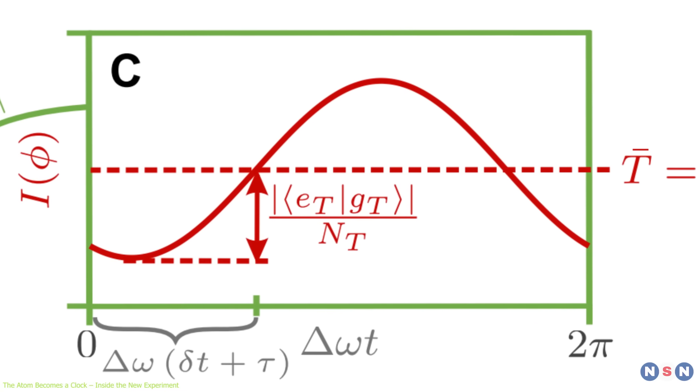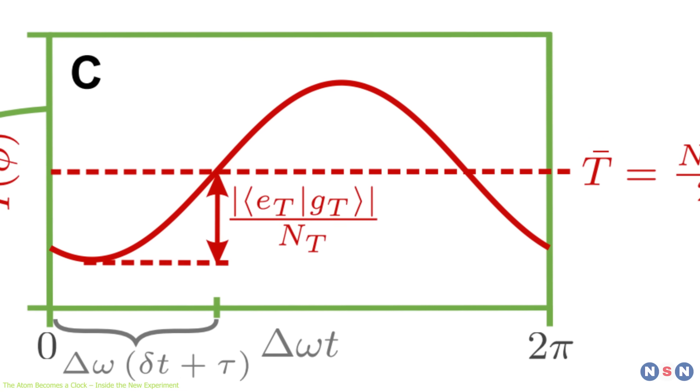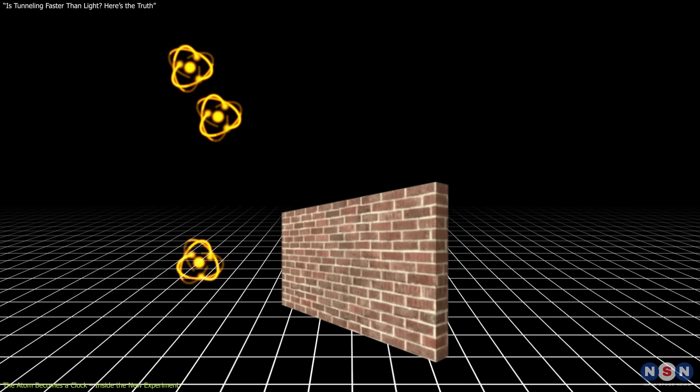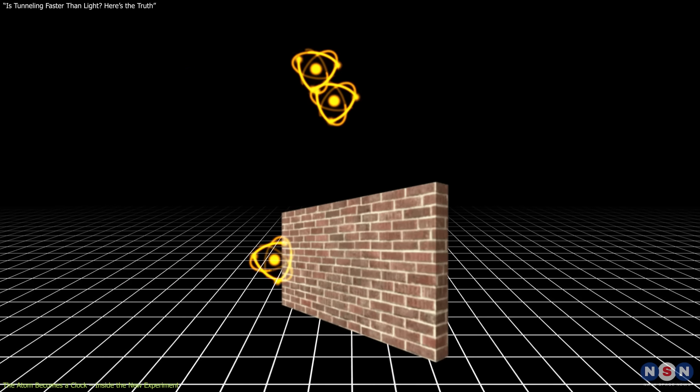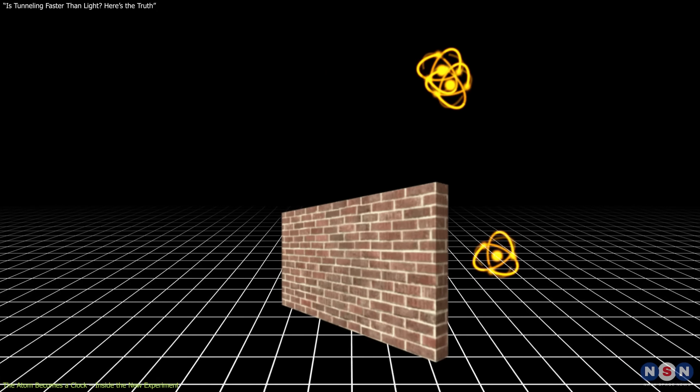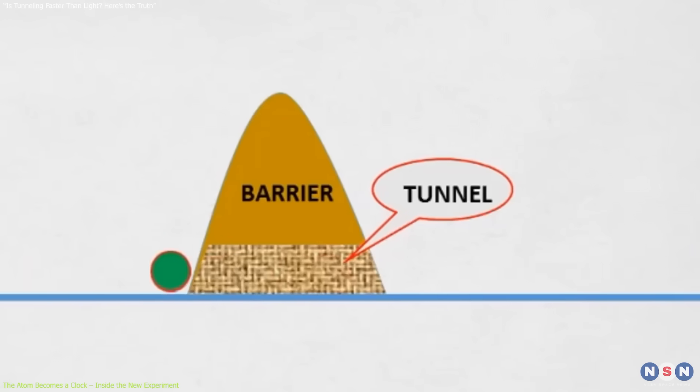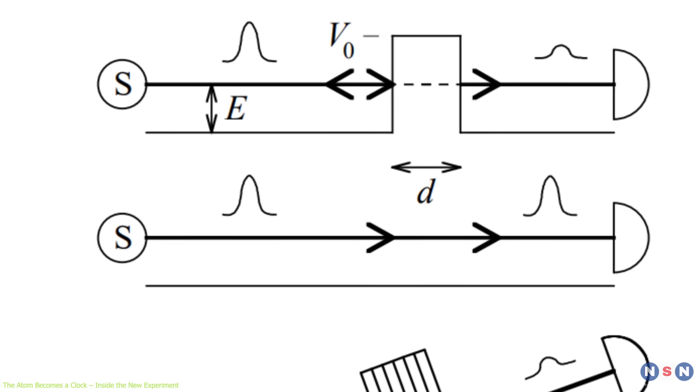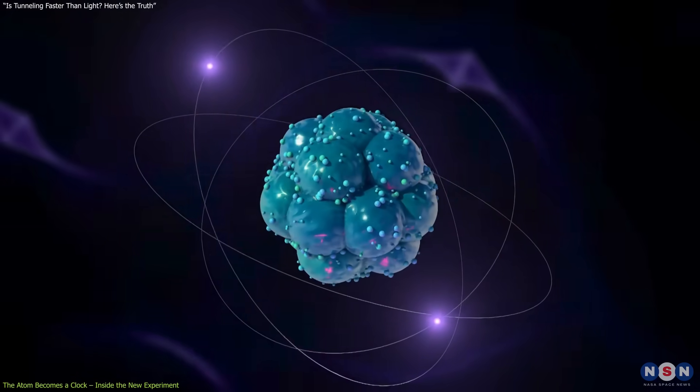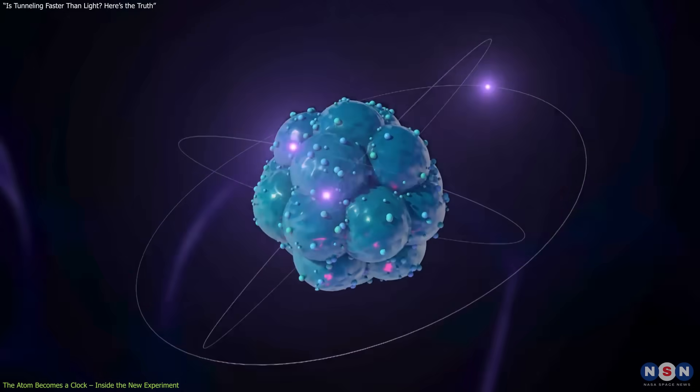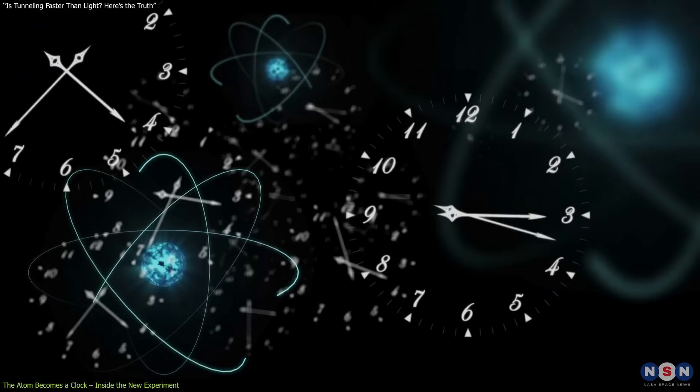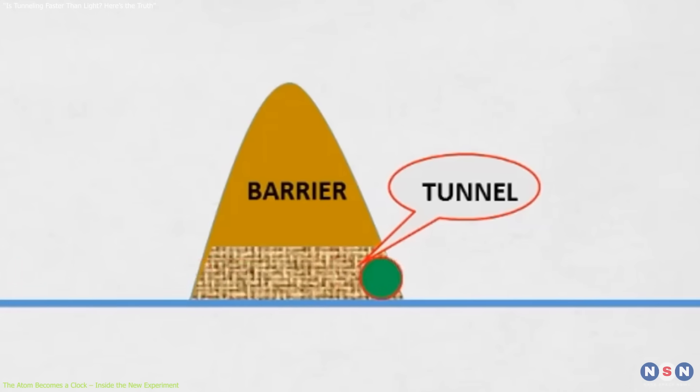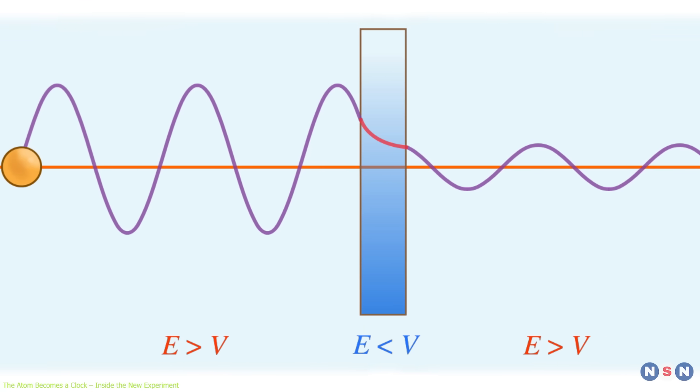This phase difference contains three components: the laboratory time, the relativistic time dilation, and the actual tunneling time. By comparing tunneled atoms with reference atoms that follow barrier-free paths, the researchers isolated the contribution due specifically to the tunneling event. What makes this technique powerful is that it doesn't rely on indirect signals or complex modeling of wave packets. Instead, it reads time directly from the oscillations of internal atomic energy levels, akin to a stopwatch riding with the particle. This allows physicists to measure interaction time within the barrier, not merely when the particle arrives on the other side.